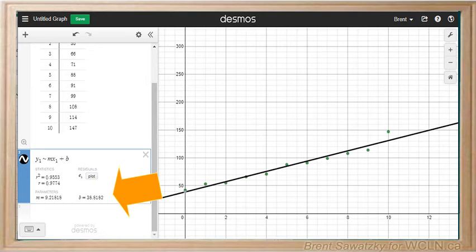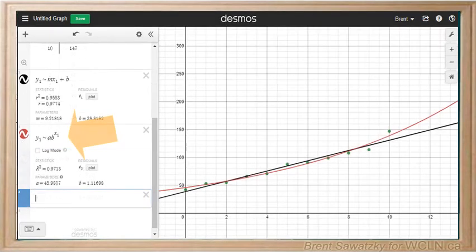If it's not perfectly clear which equation would represent your data best, you can try additional equations. For example, let's add an exponential equation: y₁ ~ ab^x₁. It appears along with our best fit line, and we can consider which is a better fit.